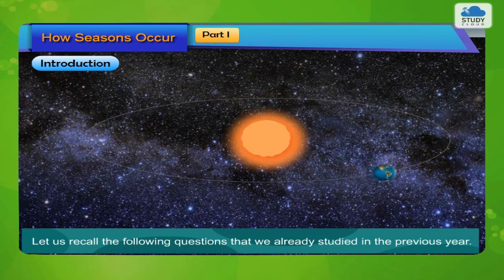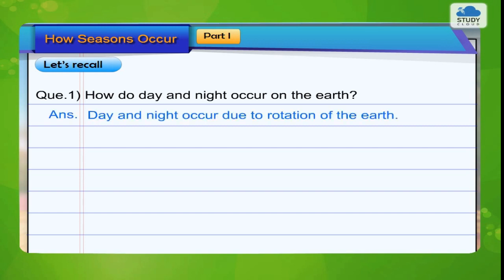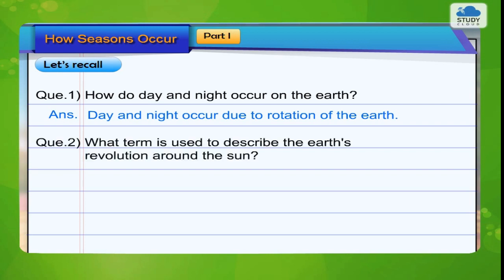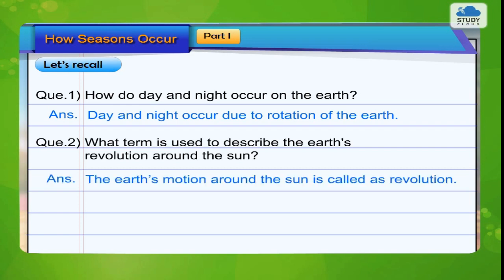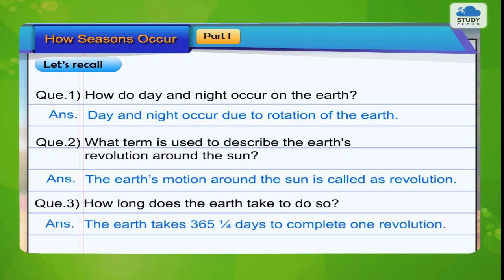Let us recall the following questions that we already studied in the previous year. How do day and night occur on the Earth? Day and night occur due to the rotation of the Earth. What term is used to describe the Earth's revolution around the Sun? The Earth's motion around the Sun is called revolution. How long does the Earth take to do so? The Earth takes 365 and one-quarter days to complete one revolution.